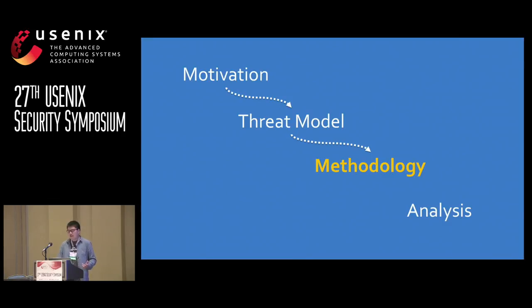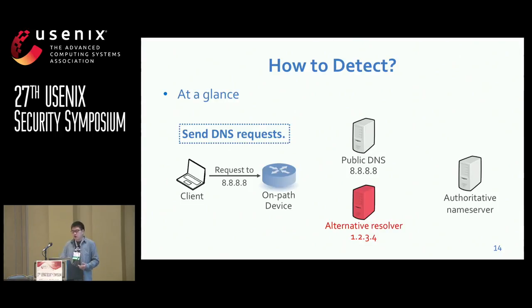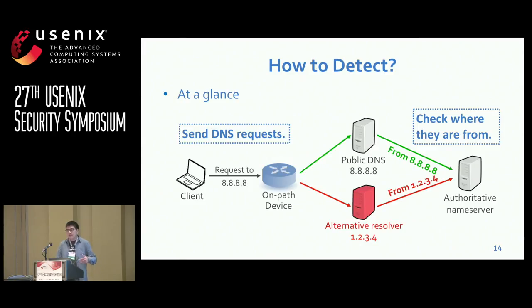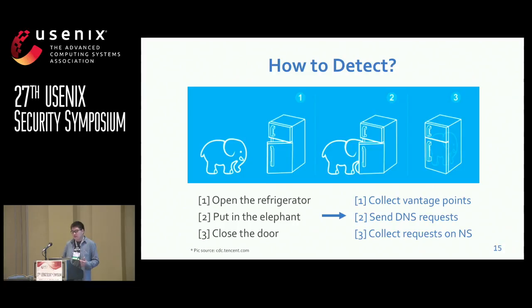How can we detect and measure this hidden interception? In each of the four kinds of DNS resolution paths, the authoritative name server receives DNS requests from different resolvers. So to detect the interception, we send DNS requests to specified public DNS resolvers from clients, and check at our authoritative name server where the DNS requests come from. If they come from the correct public DNS, then there is no interception. Otherwise, if the DNS requests come from other resolvers, then the DNS request was intercepted on its way. Our method is quite simple at a high level — we need to collect large-scale vantage points, generate DNS requests on them, and collect the corresponding DNS requests on our name server. However, just like you cannot put an elephant into a refrigerator that easily, these three simple steps each pose a challenge.